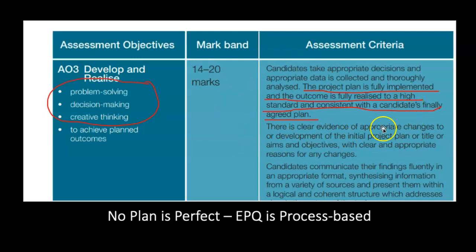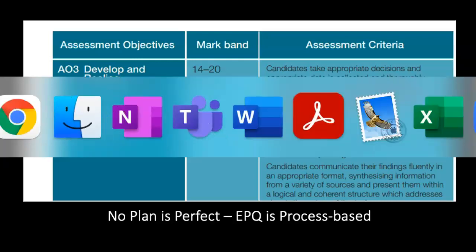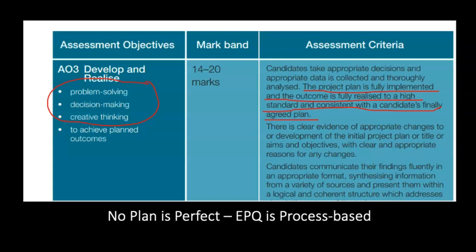To get top marks, to get an AO1 A-star, the project plan is fully implemented and the outcome is fully realised to a high standard and consistent with the candidate's finally agreed plan. The emphasis is on 'finally' — that means until the mid-project review you can change the title and actually change the outcomes. So you want to show both planning, but that needs to be balanced with flexibility.